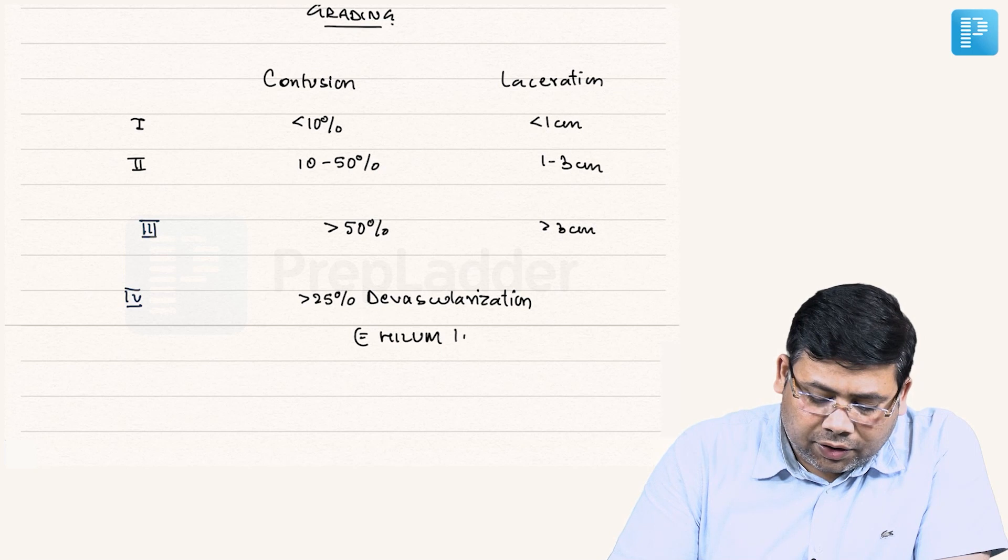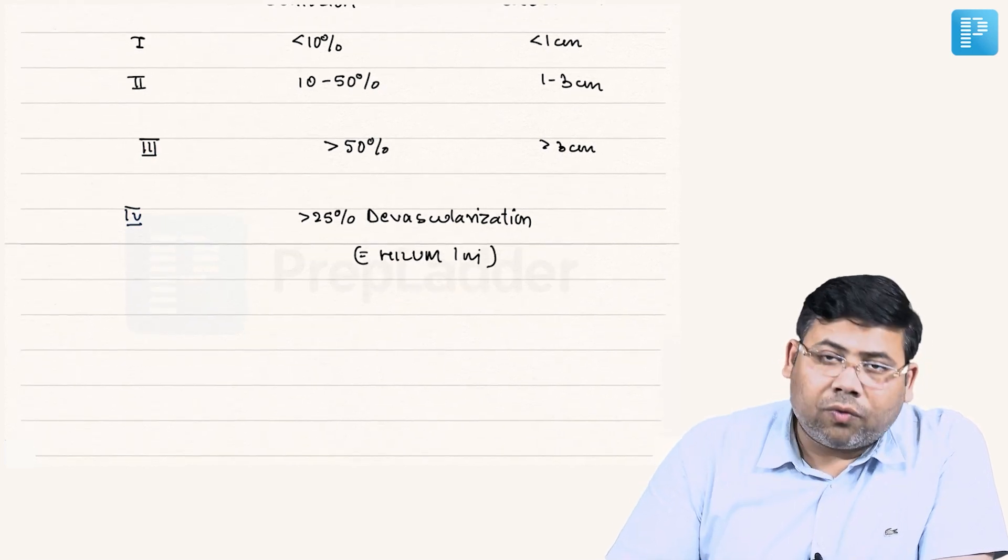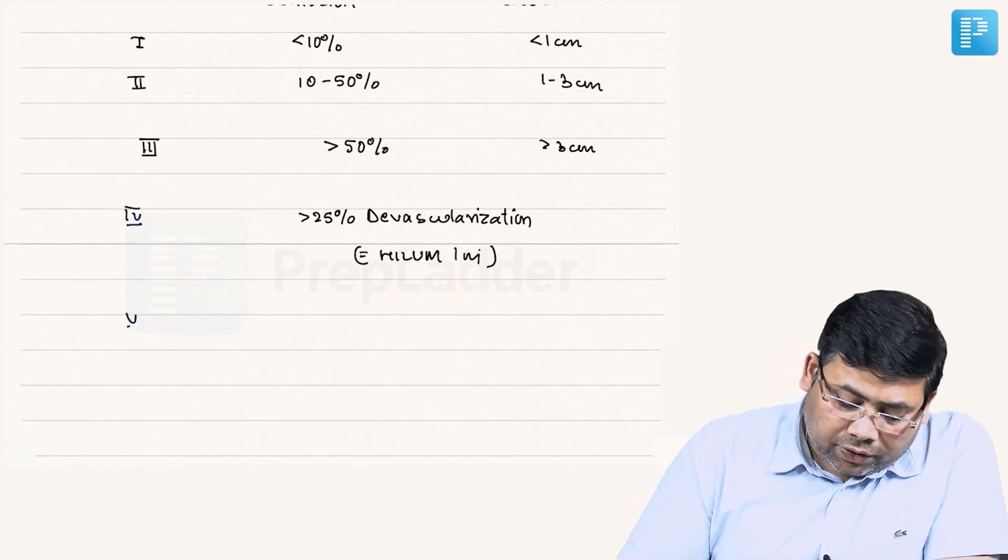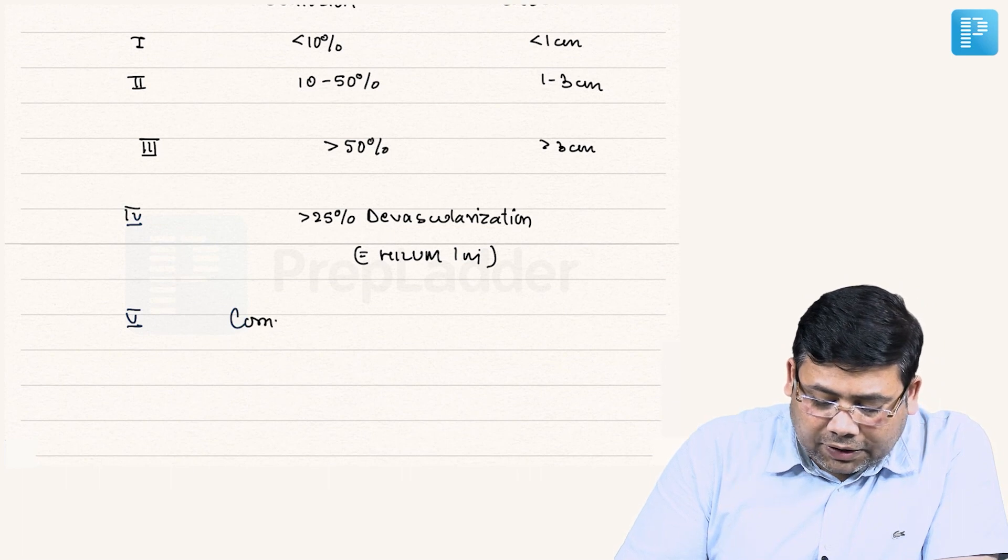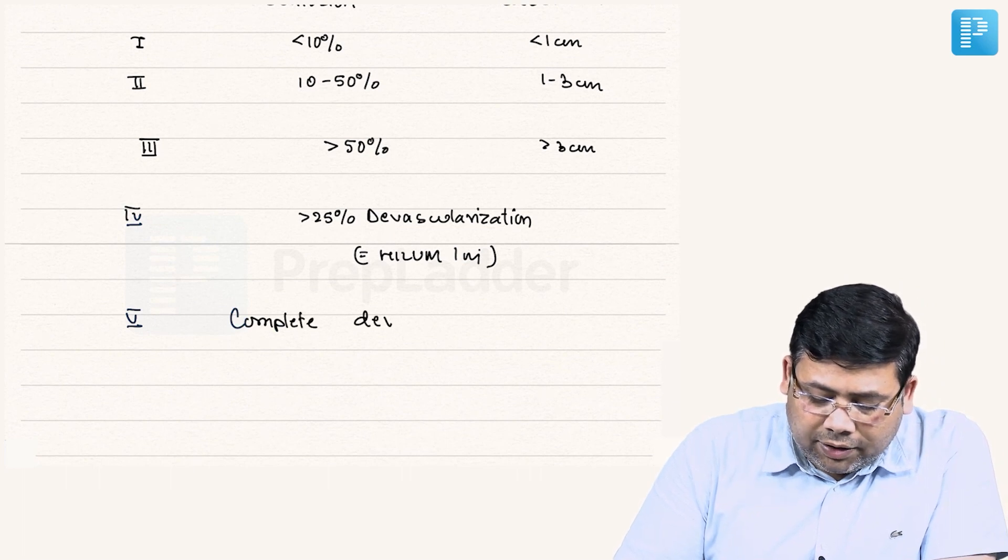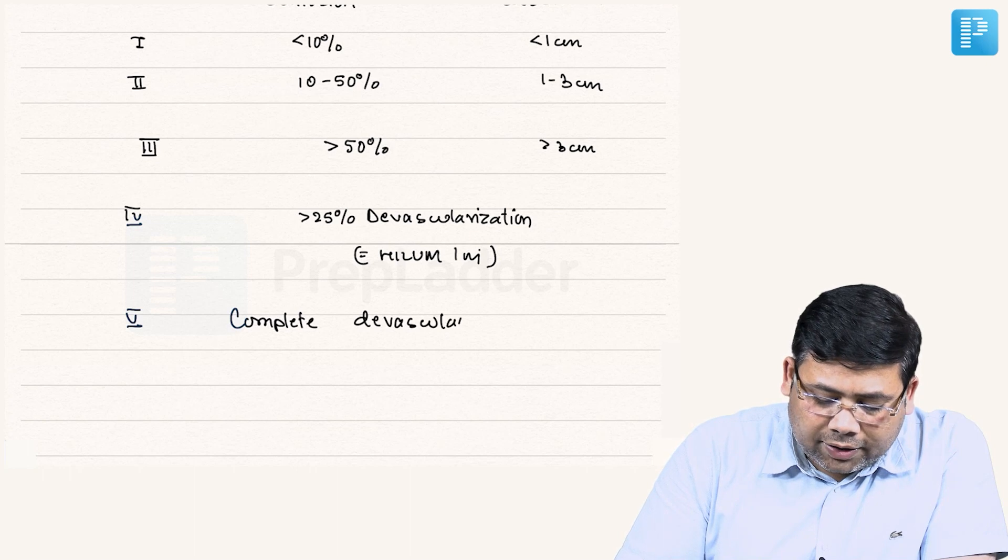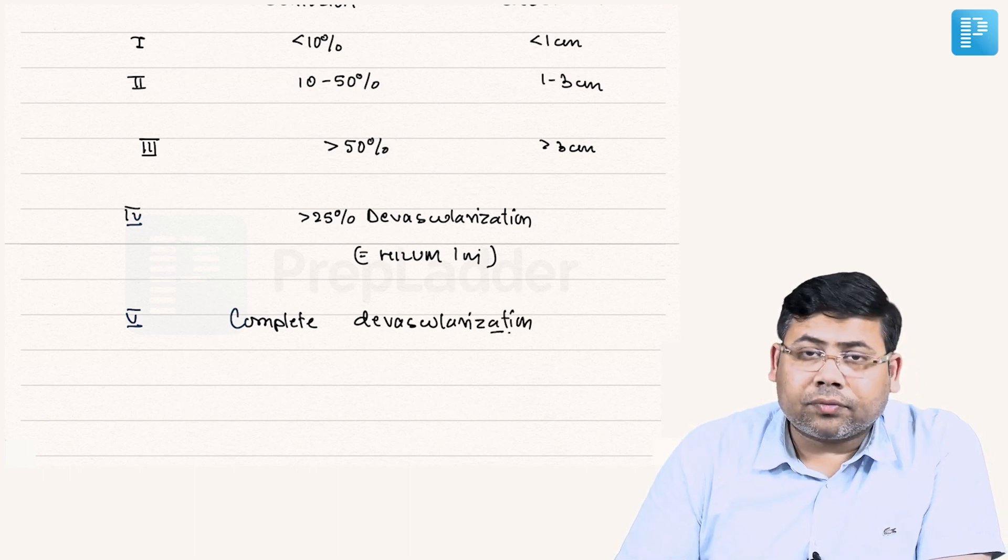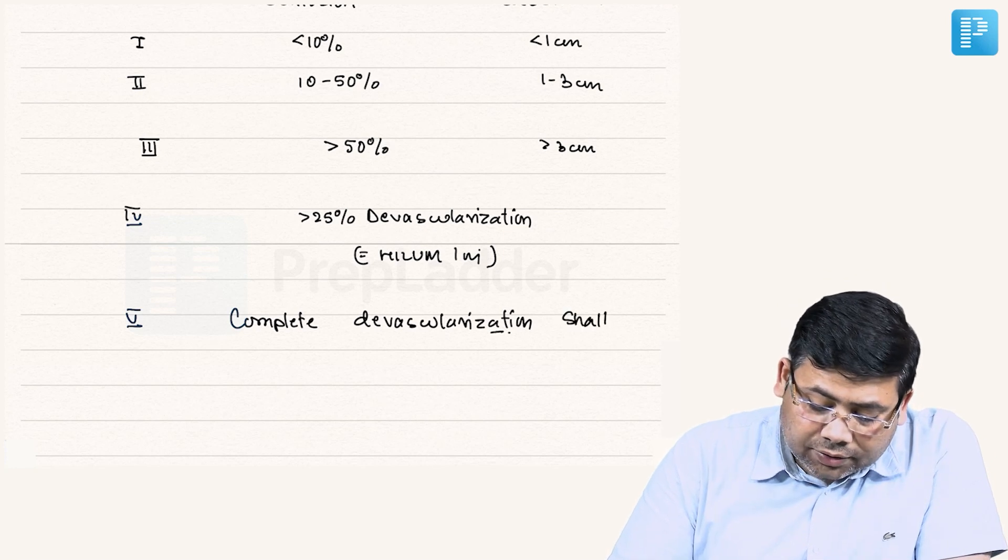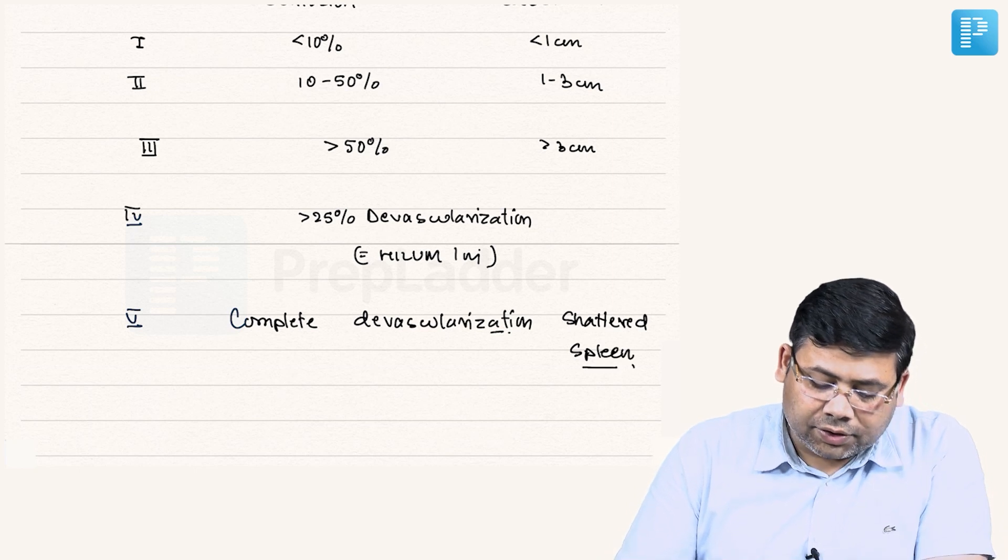Grade 5: complete devascularization, and the second is shattered spleen. So we have shattered spleen and complete devascularization as grade 5.